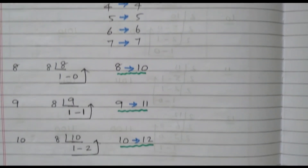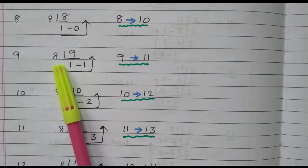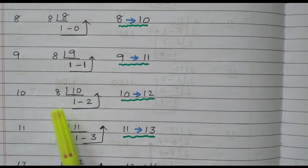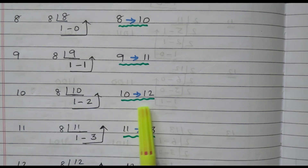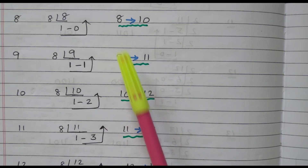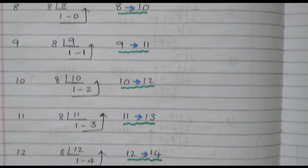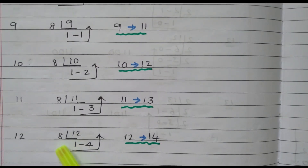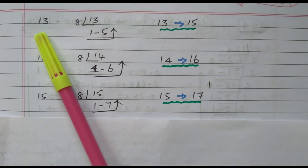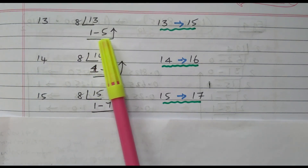For decimal 9, divide by 8: 1 time with remainder 1 — writing in reverse gives 11. So 8 is represented as 10 and 9 as 11. For decimal 10, divide by 8: 1 time with remainder 2 — gives octal 12. For decimal 11, divide by 8: 1 time with remainder 3 — gives octal 13. We are continuously getting 10, 11, 12, 13 representing decimal 8, 9, 10, 11. For decimal 12, divide by 8: 1 time with remainder 4 — gives octal 14. For decimal 13, divide by 8: 1 time with remainder 5 — gives octal 15.